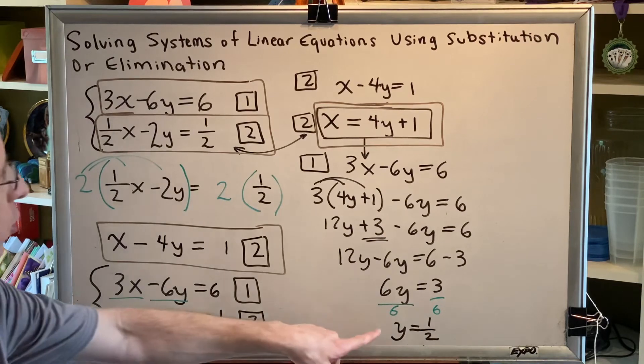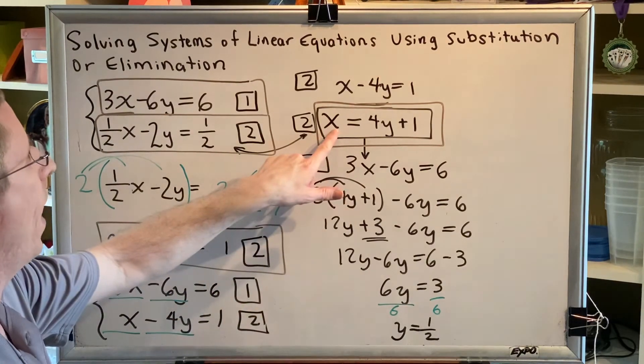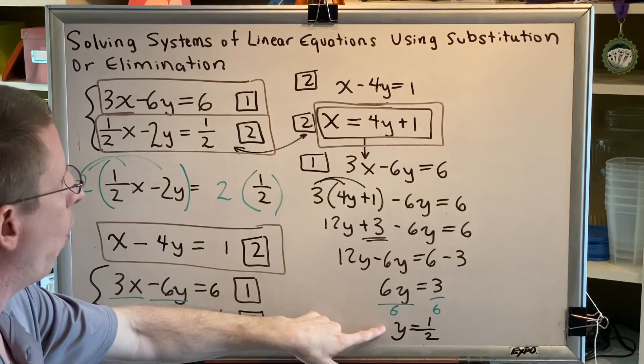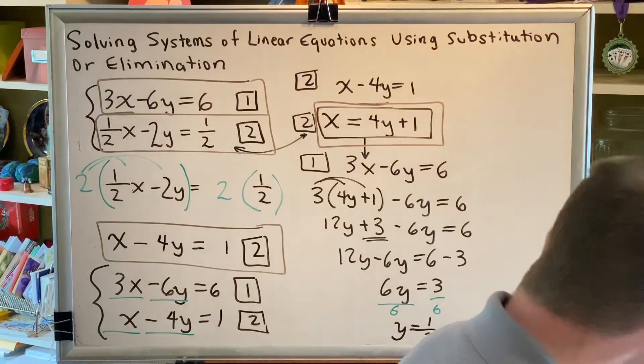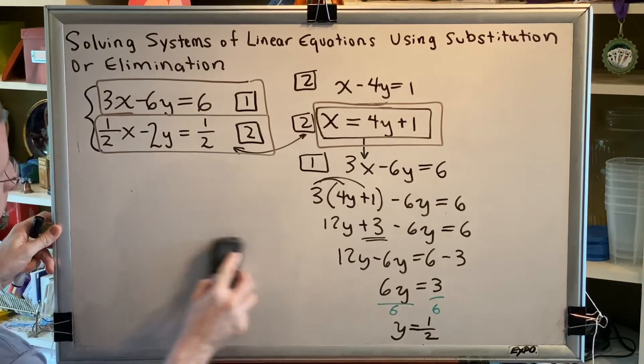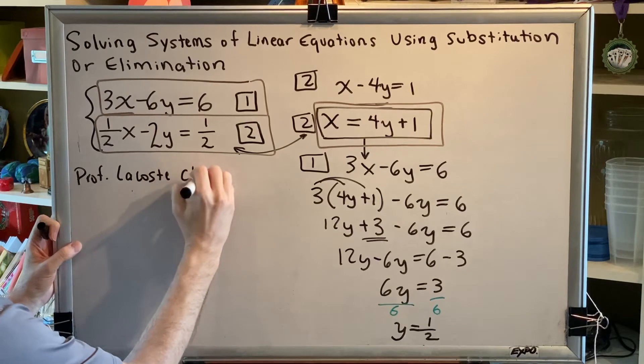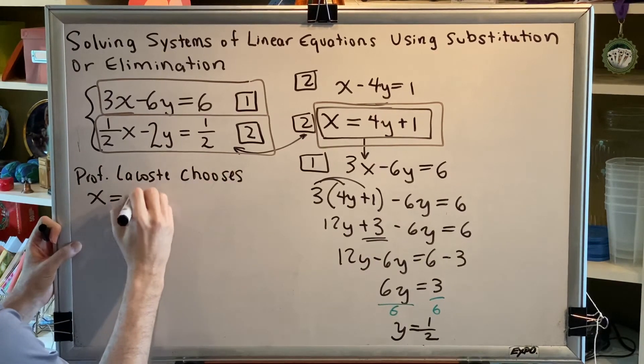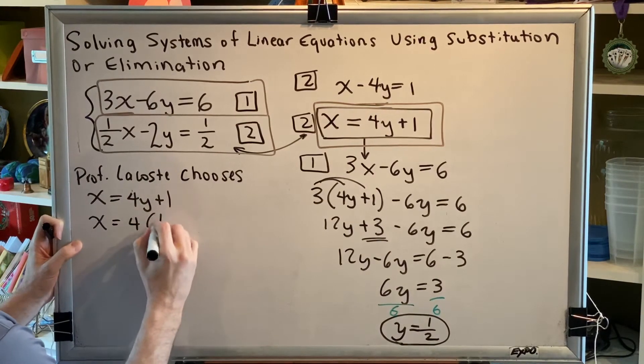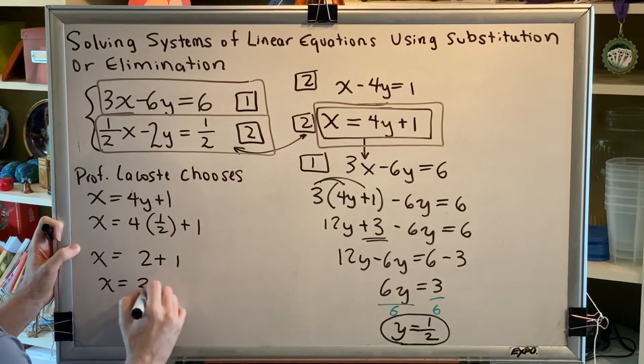Well, I would submit that since what we're trying to do is plug in y to find what x equals, we really should pick an equation that starts with x equals. In my professional opinion, x equals 4y plus 1 is the best equation to plug our y equals 1 half into. So let's go ahead and do that. So I'm going to write Professor Lacoste chooses x equals 4y plus 1 and we're going to plug in y equals 1 half. So we get x equals 4 times 1 half plus 1. 4 times 1 half is 2, so we get 2 plus 1, and therefore x equals 3.